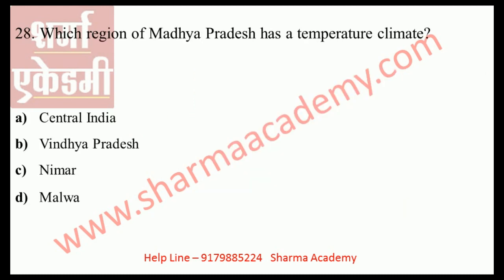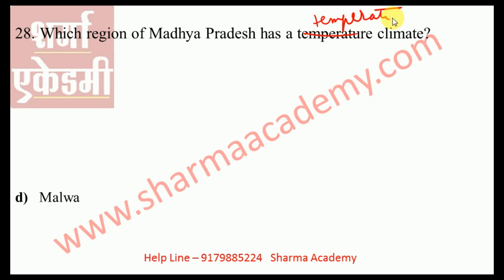Which region of Madhya Pradesh has a temperate climate? Options: Central India, Vindhya Pradesh, Nimad, or Malwa. The correct answer is Malwa. The Malwa Plateau, located in the western part of Madhya Pradesh, has the characteristics of dry continental climate and temperate climate — meaning neither very high temperatures nor very cold conditions. It is an optimum type of climate.